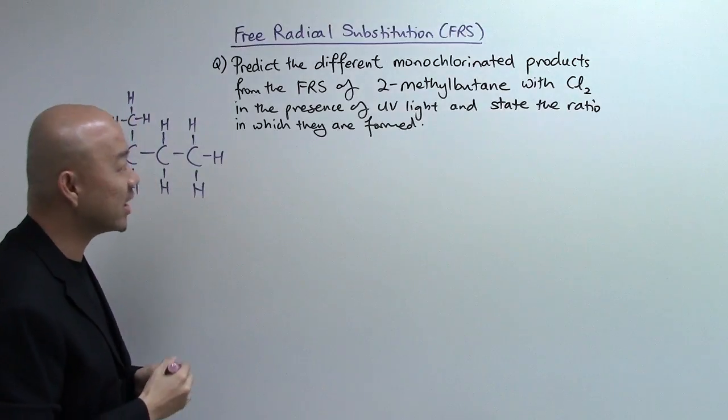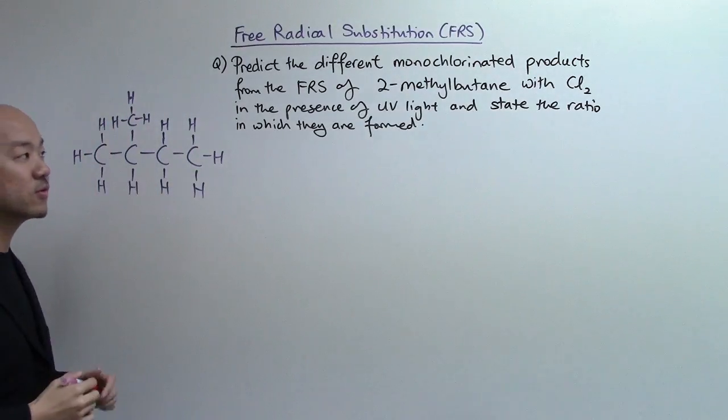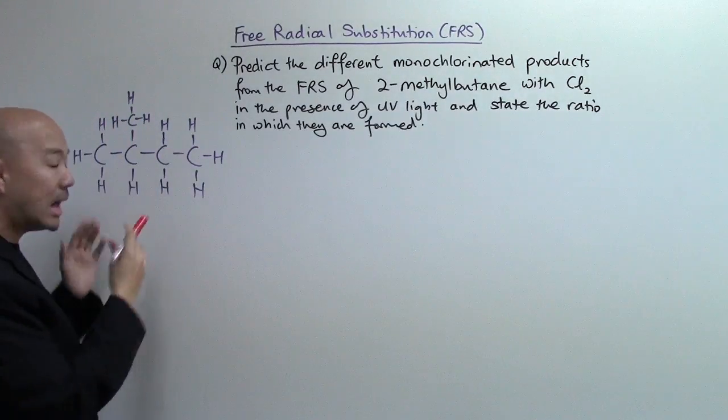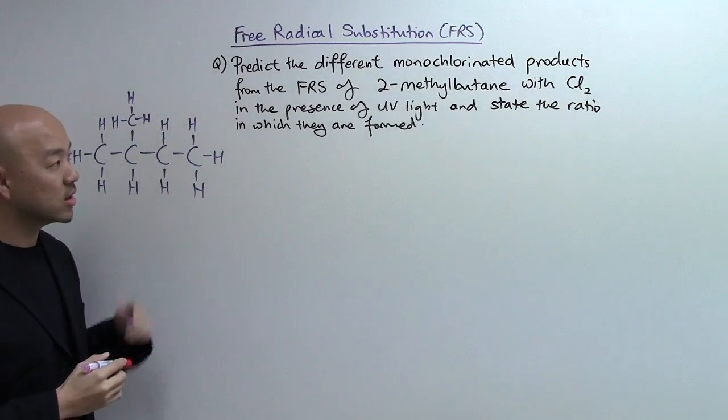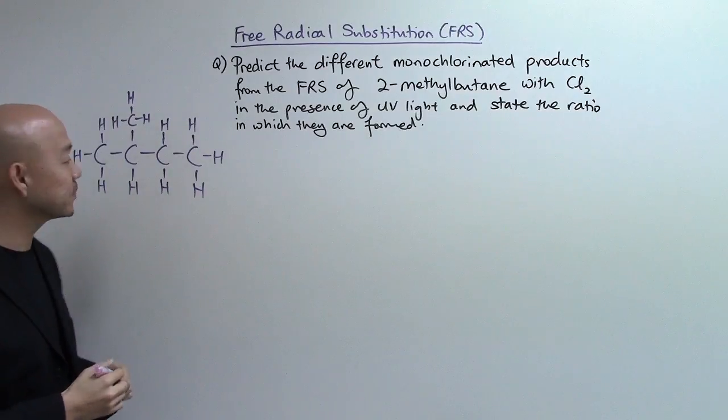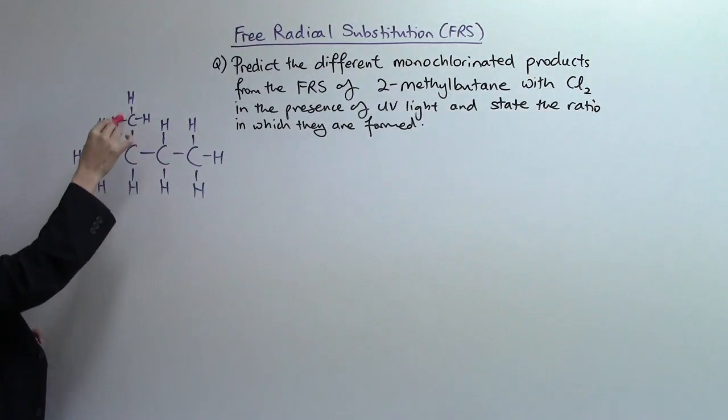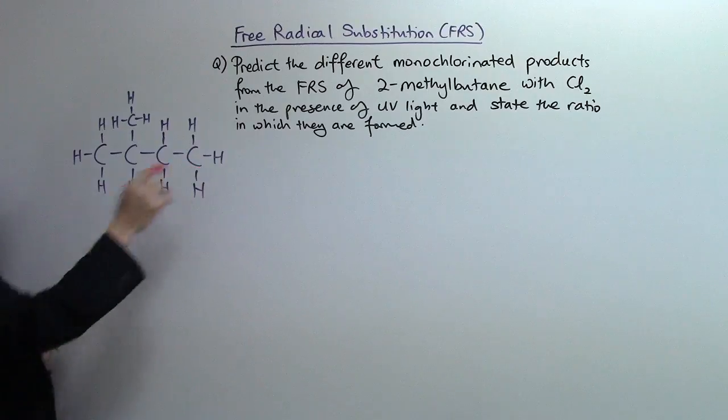First we need to have the full structural formula of 2-methylbutane out so that you can clearly see what are the different hydrogen atoms that could be replaced by the chlorine atom. So this is 2-methylbutane.